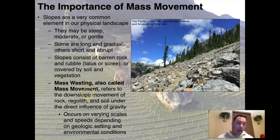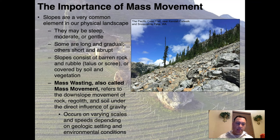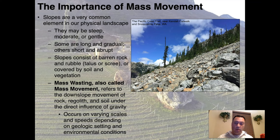Mass wasting — also called mass movement; I'll use both terms interchangeably — refers to the downslope movement of rock, regolith, and soil under the direct influence of gravity. This is not something where rainwater is washing rocks down; that's a different phenomenon. When we get to rivers we'll talk about how rocks are moved in rivers, but mass movement is purely gravity-driven.